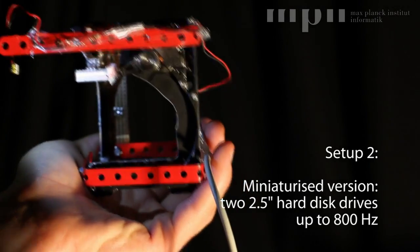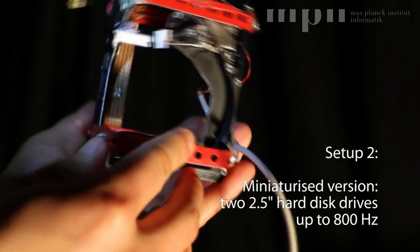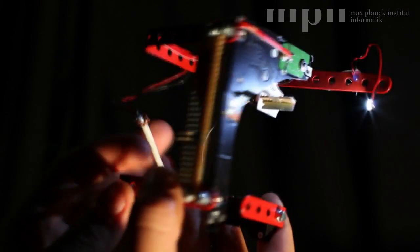Setup 2 is a downscaled version built from two 2.5 inch hard disk drives. This setup can run at considerably higher frequencies.